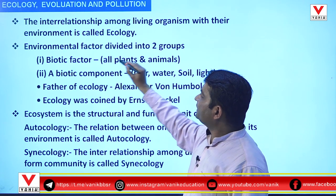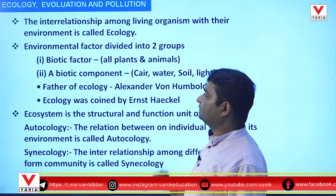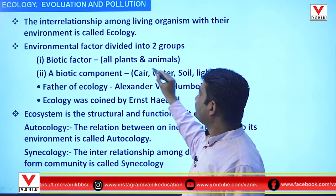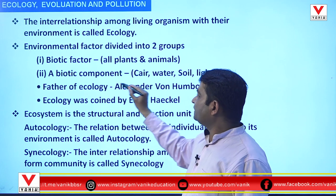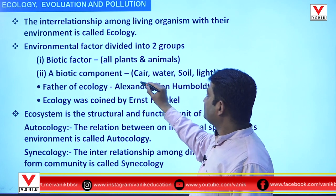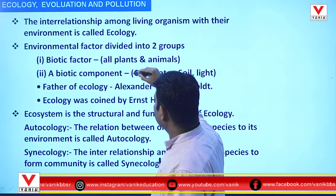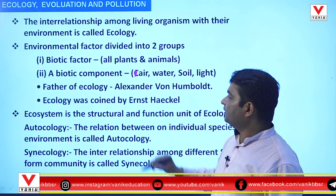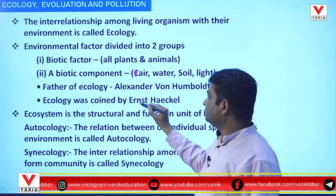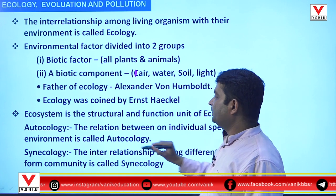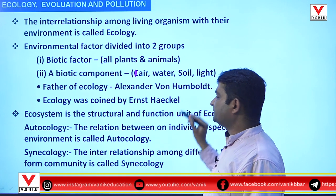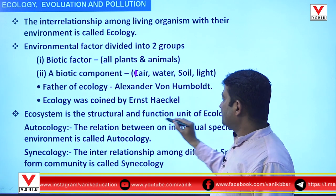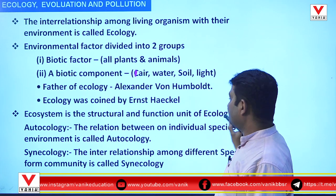The interrelationship among living organisms with their environment is called ecology. Now environmental factors are divided into two categories: one is the biotic factor, which includes all plants and animals; and the abiotic component, which includes air, water, soil, and light. The father of ecology is Alexander von Humboldt, and the term ecology was coined by Ernest Haeckel. The ecosystem is the structural and functional unit of ecology.